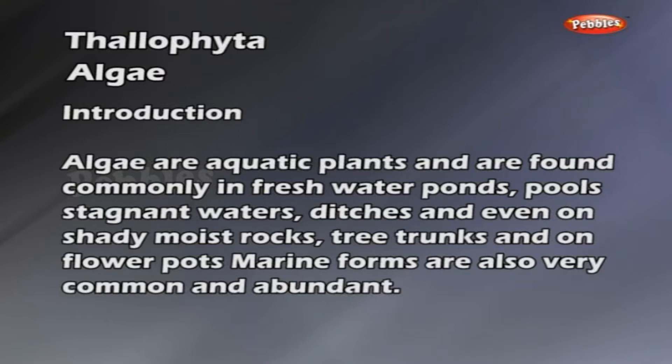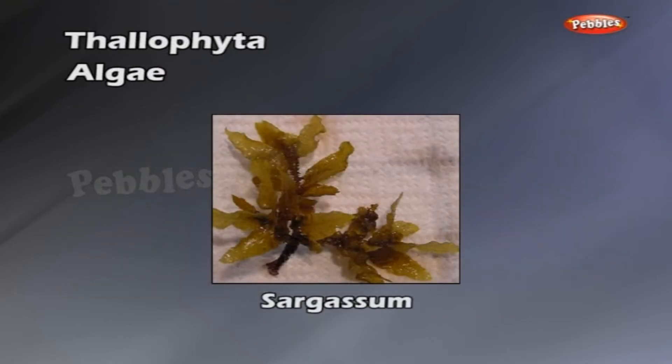Algae are aquatic plants and are found commonly in freshwater ponds, pools, stagnant waters, ditches and even on shady moist rocks, tree trunks and on flowerpots. Marine forms are also very common and abundant.